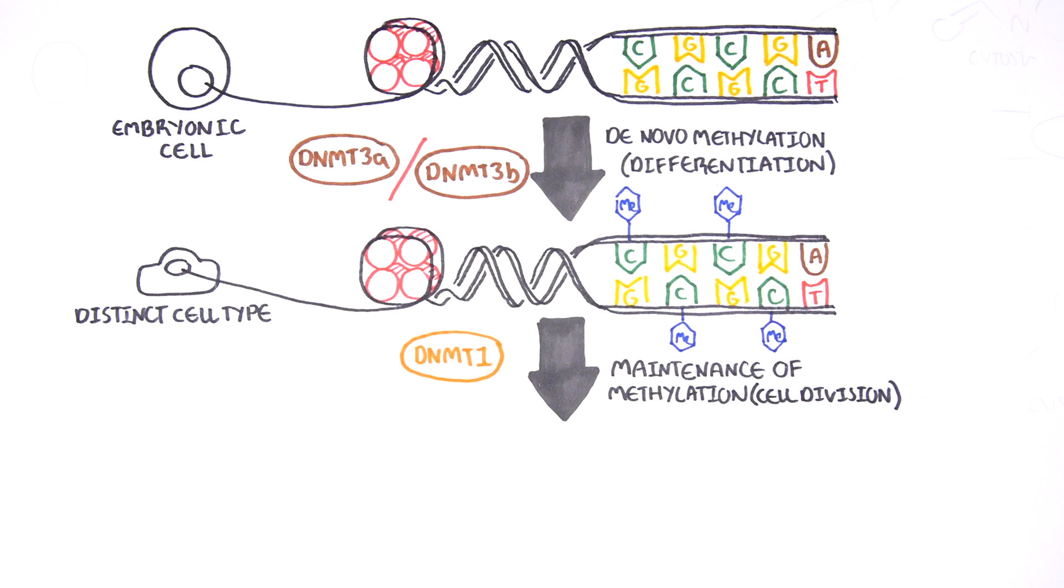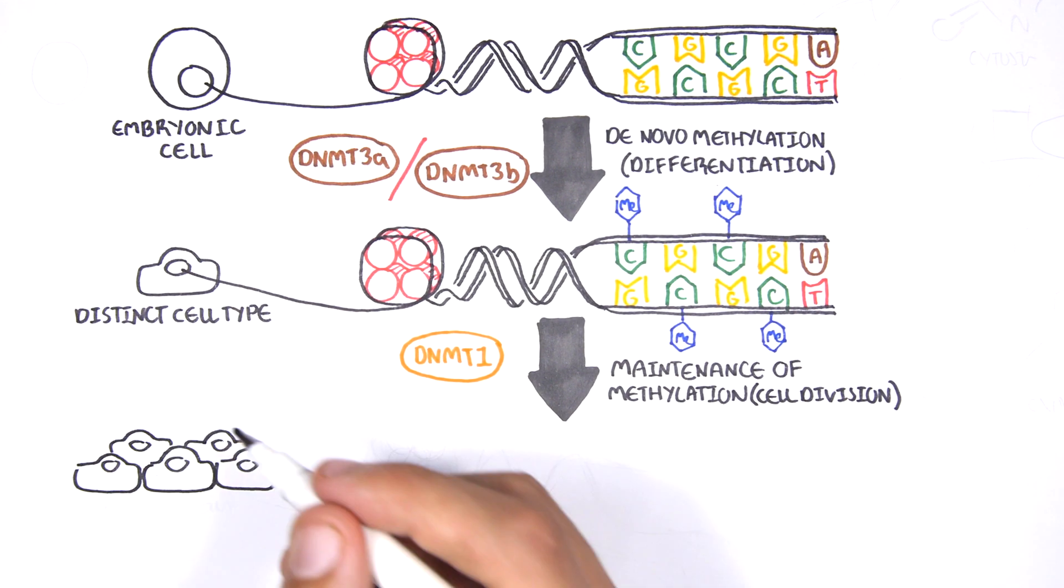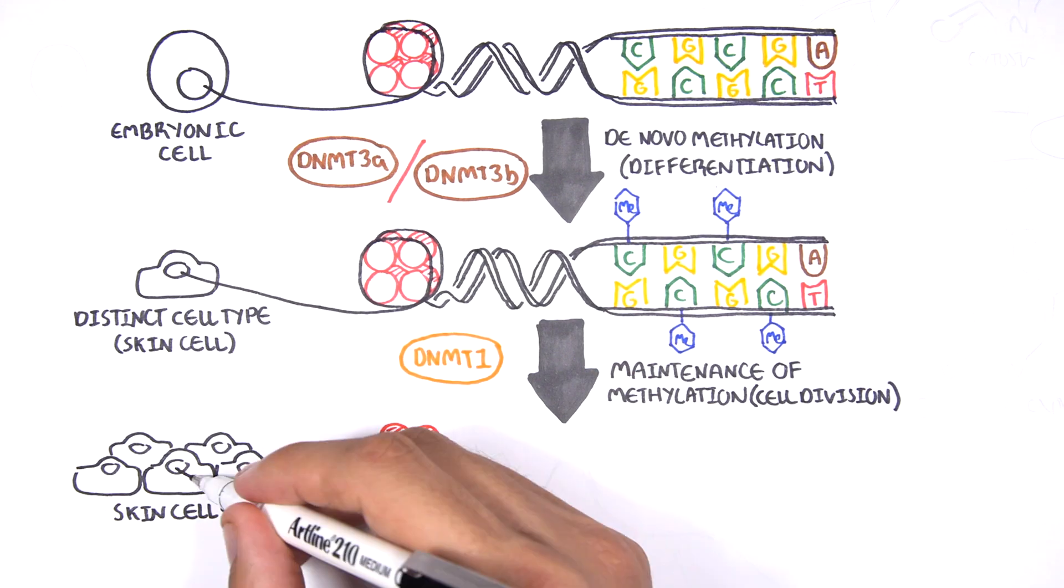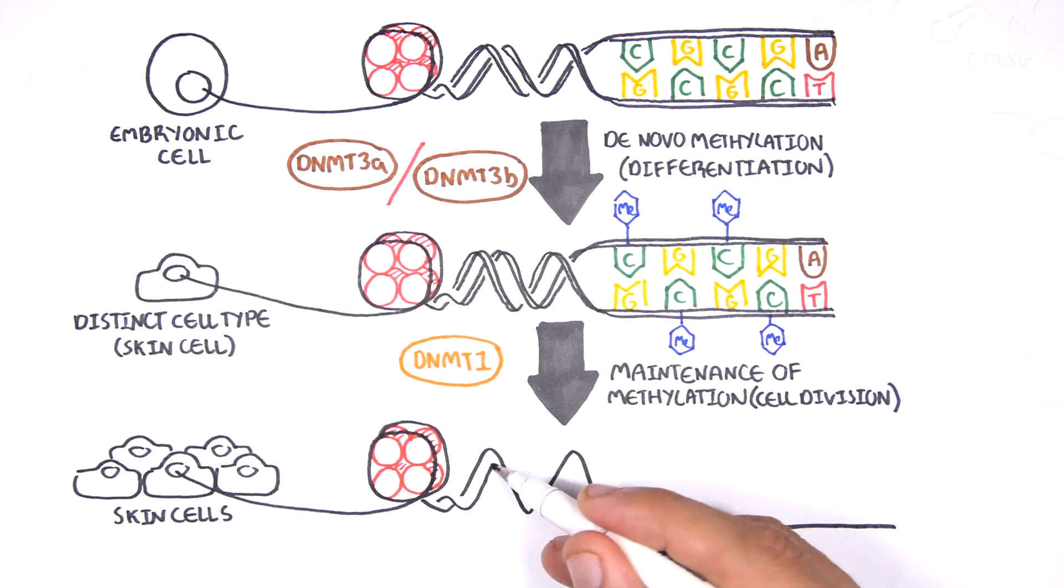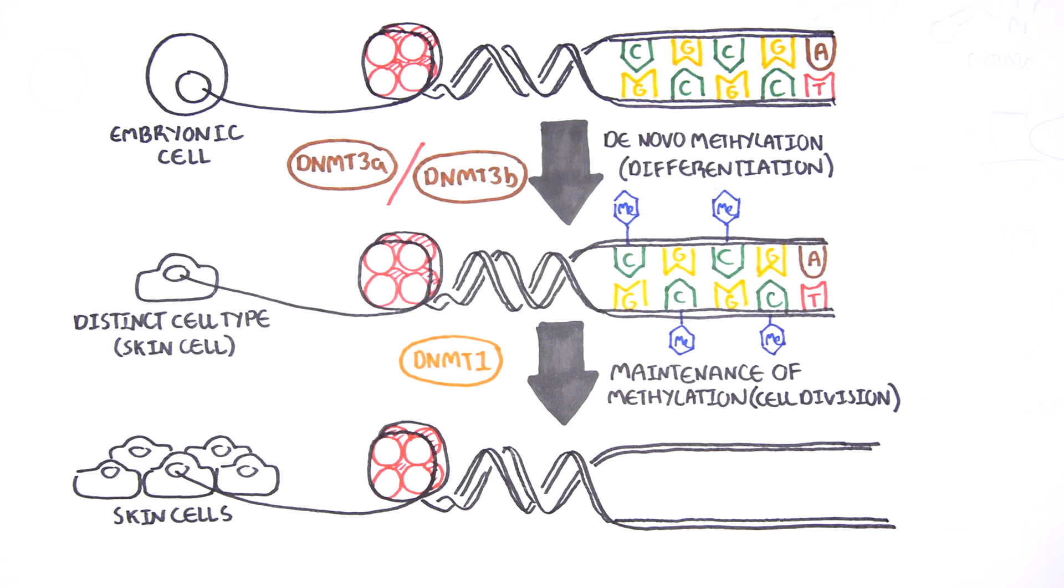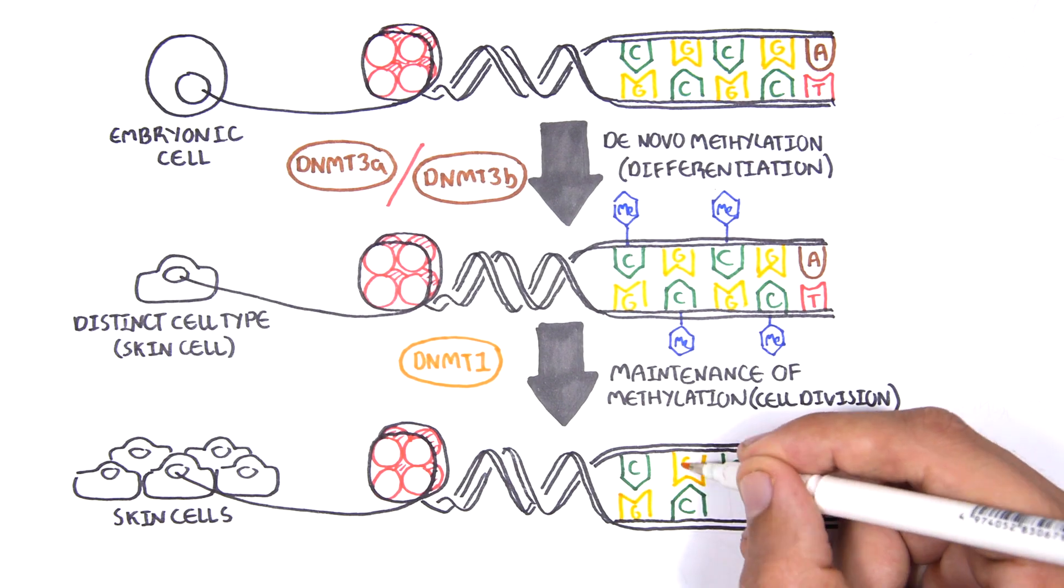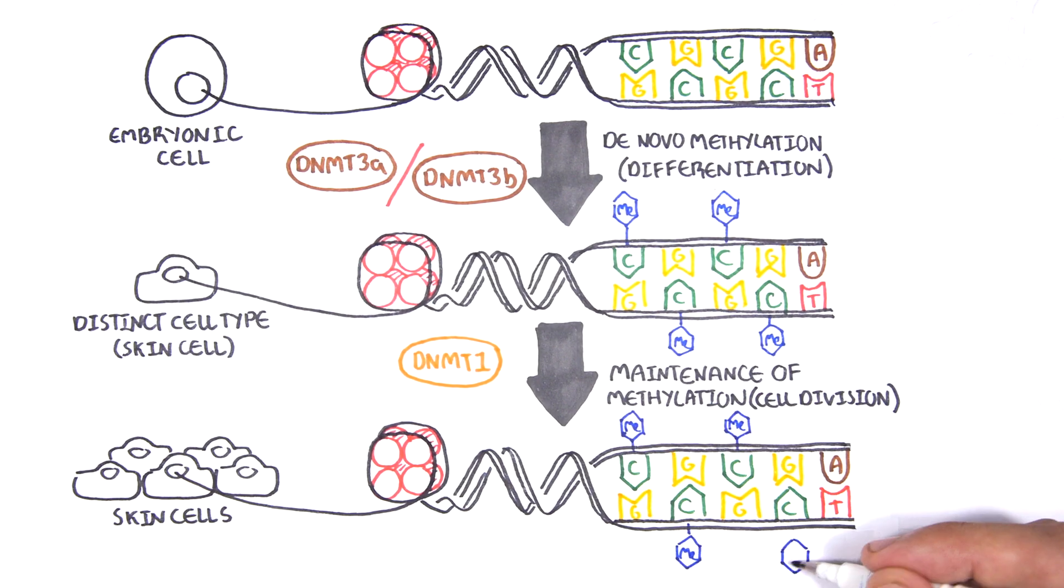The methylation patterns of each cell type is different, and this reflects the gene expression pattern of the cell. So in this case, we have one skin cell becoming many skin cells. This cell type has a unique methylation pattern and therefore expresses certain genes.